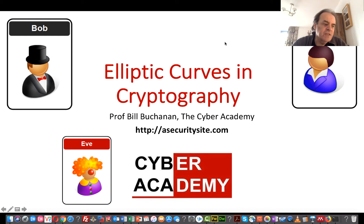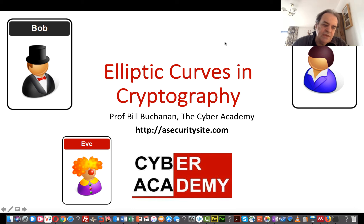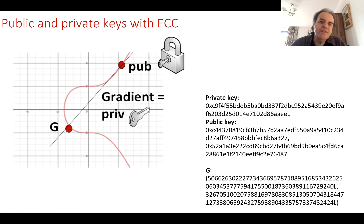Let's look at elliptic curves in cryptography. Elliptic curves are used very extensively now in identifying entities and in key exchange. Typical places include blockchain, Bitcoin, the Tor network, and smart cards. Their impact is increasing. There isn't one elliptic curve that we use — there are many different standards.